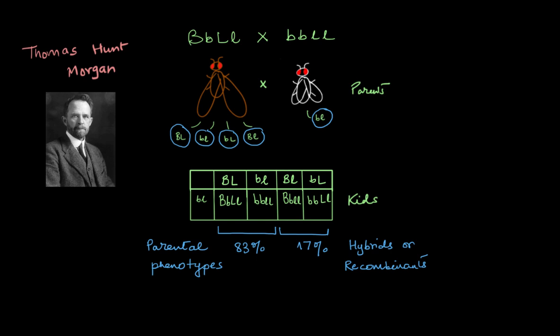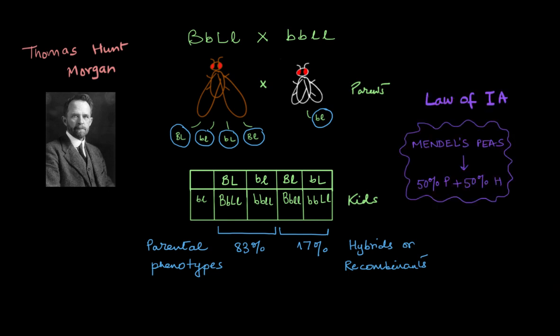Thomas Hunt Morgan's life turned upside down when he discovered a dihybrid cross between fruit flies that didn't follow Mendel's law of independent assortment. The cross should have given him an offspring population in which half looked exactly like the parents and the remaining half looked completely brand new — the hybrids.